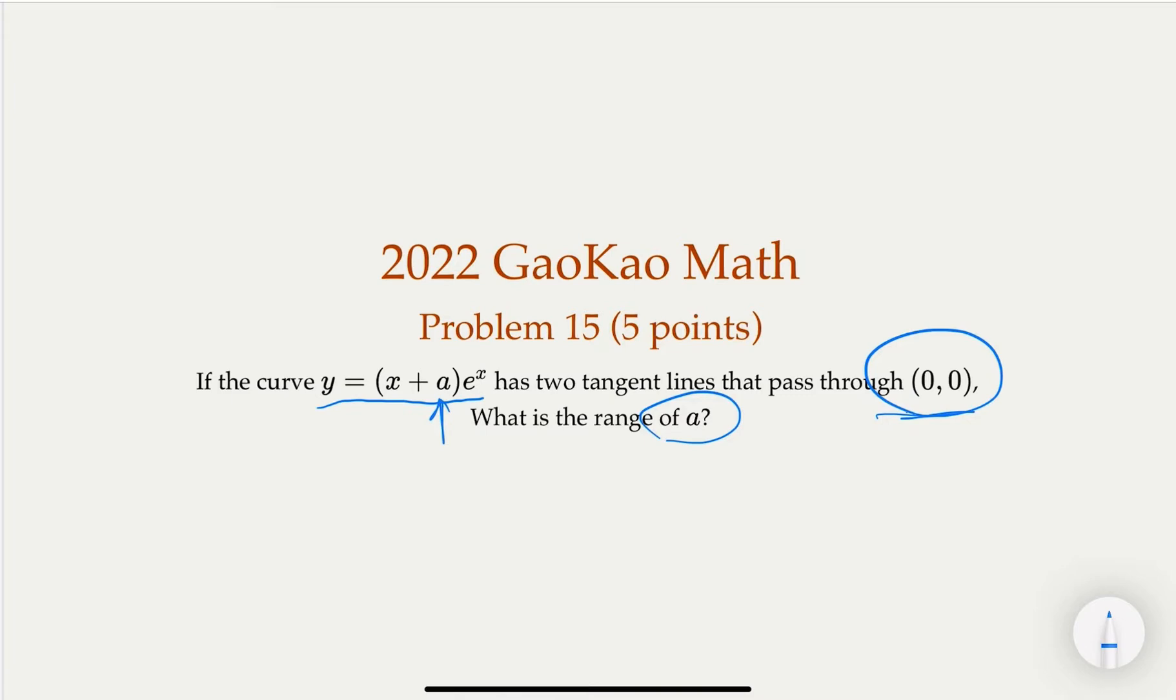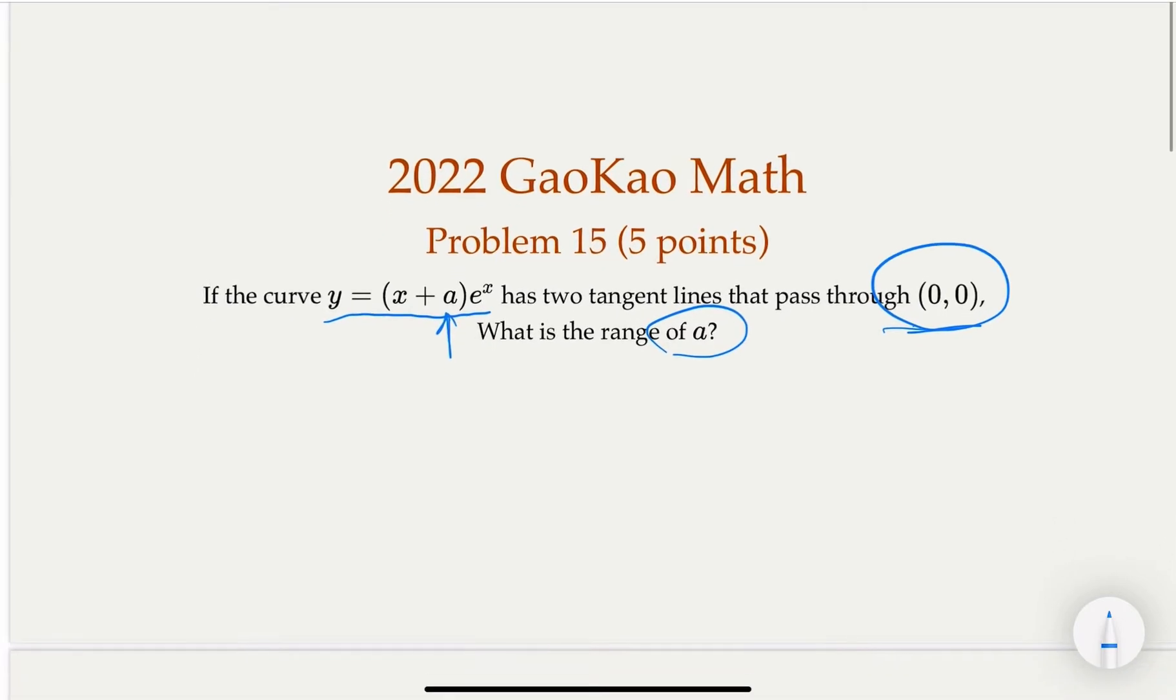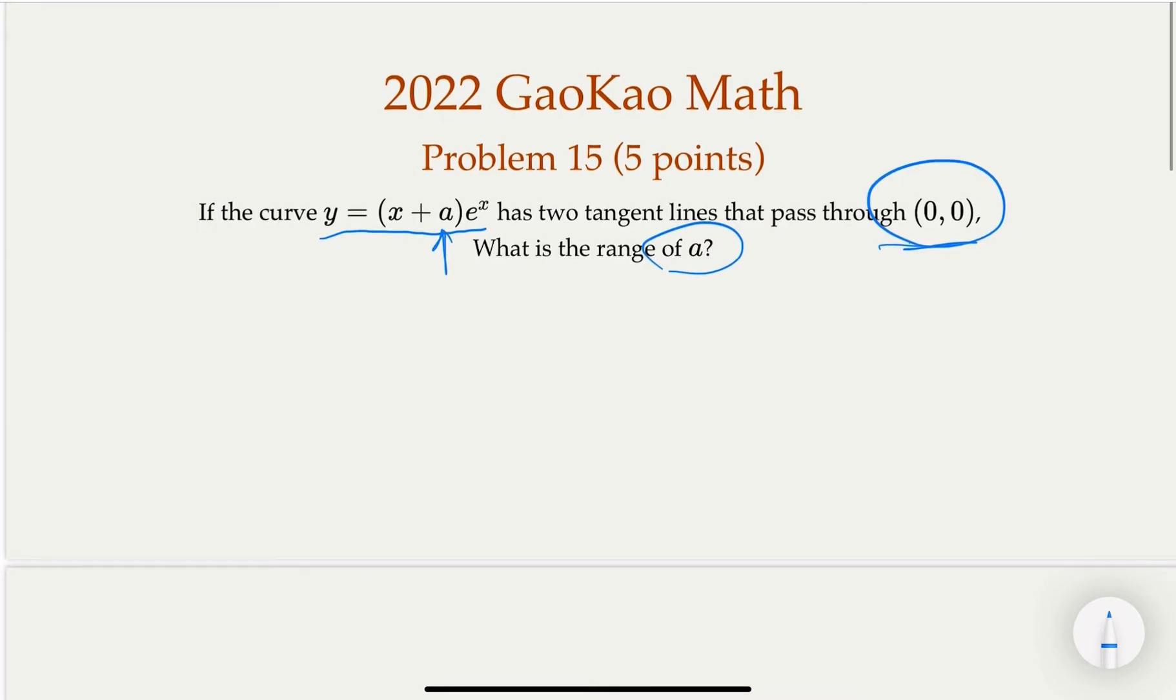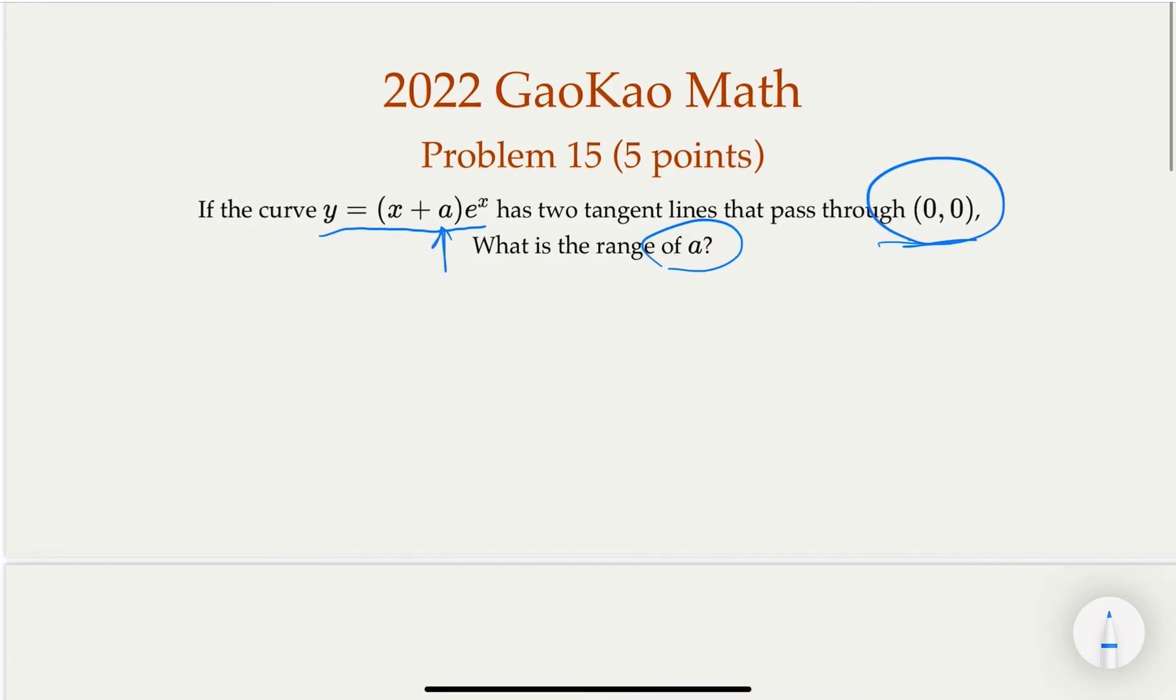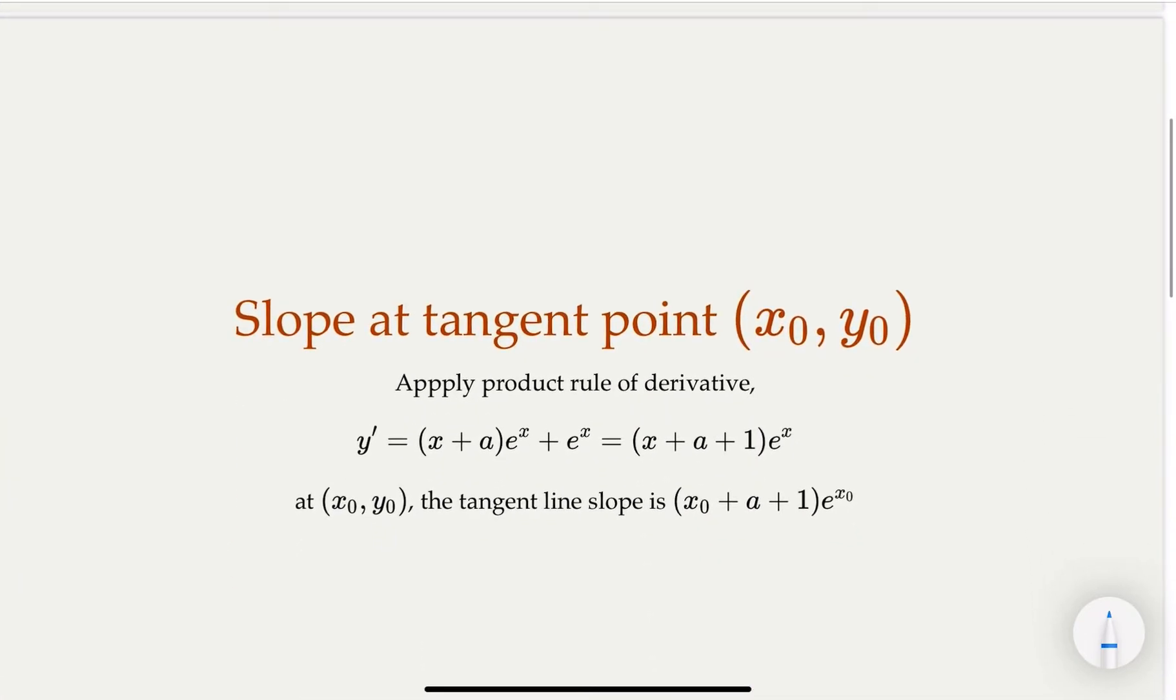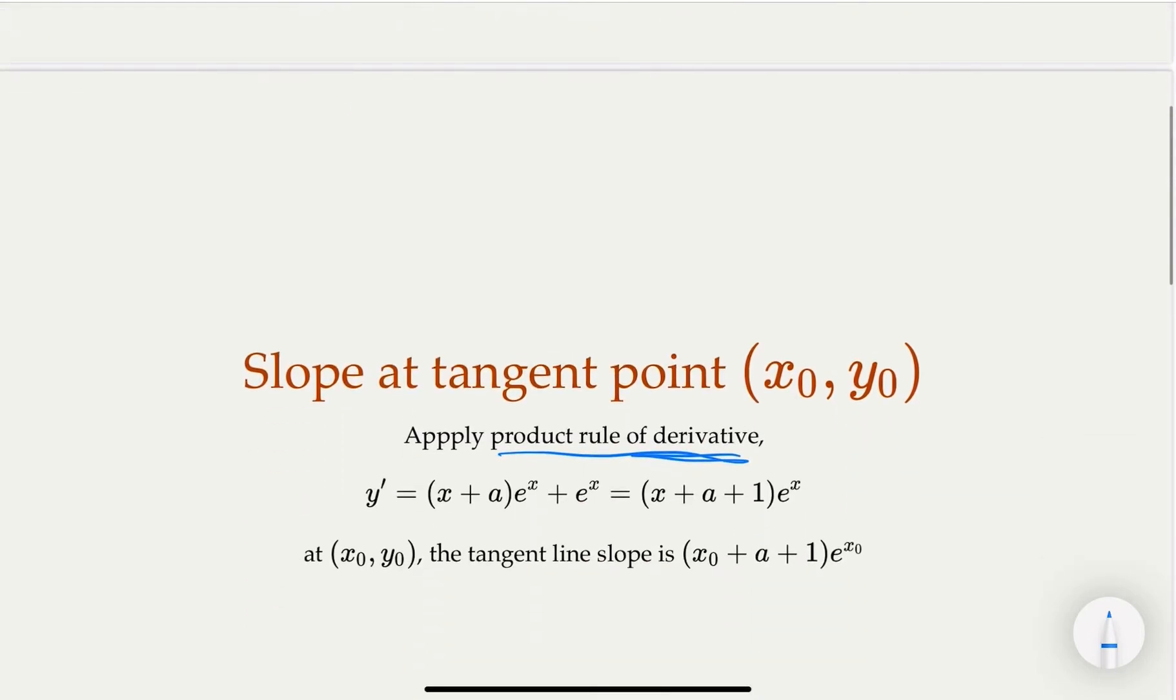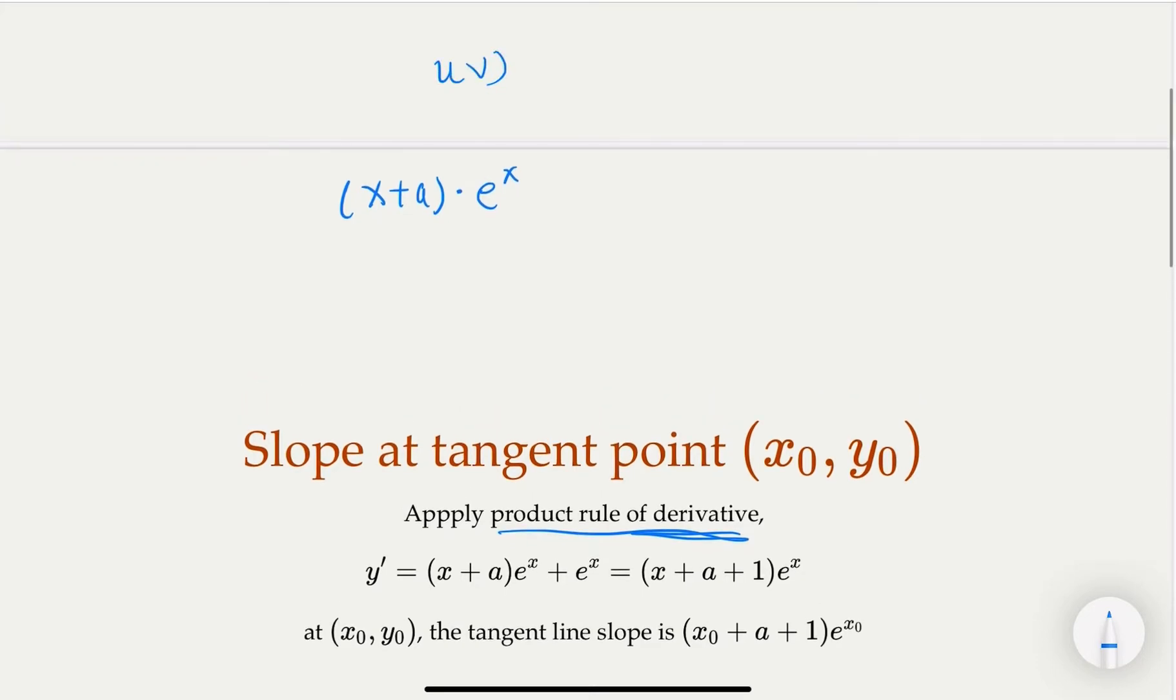So let's continue. Here we notice that we need to use the derivative of the function because for the tangent line, you need to know the slope. We're going to use the product rule of the derivative. The product rule says uv derivative is u derivative times v plus u times v derivative.